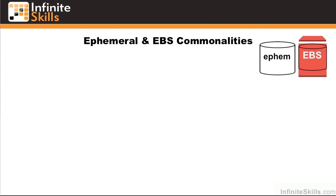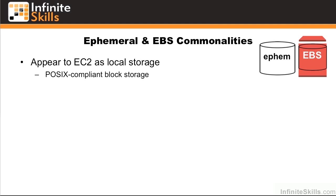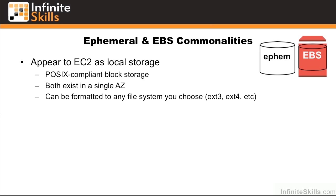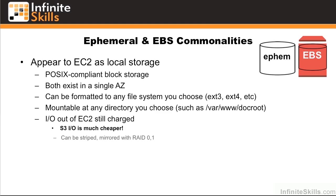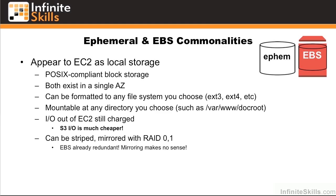Let's look at some of the commonalities between these disk types. They both appear to the EC2 as local storage. They're both POSIX-compliant block storage — you can think of them as a 3.5-inch disk that you'd just slide into a server and provision. Both exist in a single availability zone. They can each be formatted to any file system you choose, and mountable at any directory you choose, such as the server's web root. The I/O out of the EC2 instance in both cases is charged — S3 I/O is always going to be your cheapest. They can be striped and mirrored with RAID, but in the case of EBS, the disks are already redundant, so mirroring makes no sense, though striping may.